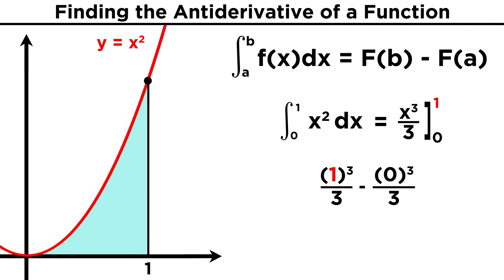When x equals one, x cubed over three equals one third. And when x equals zero, it equals zero. So the answer is one third.